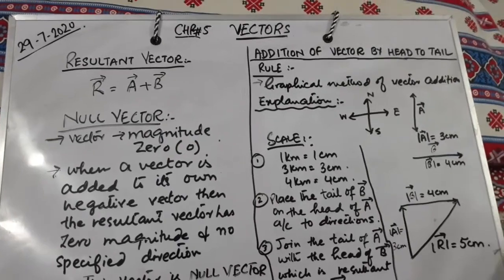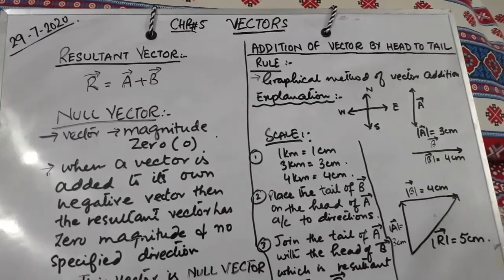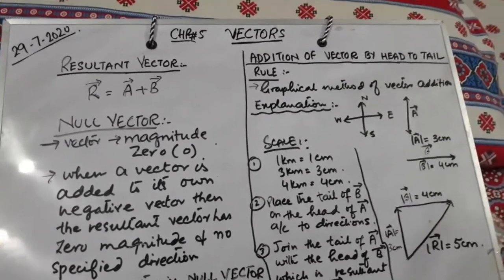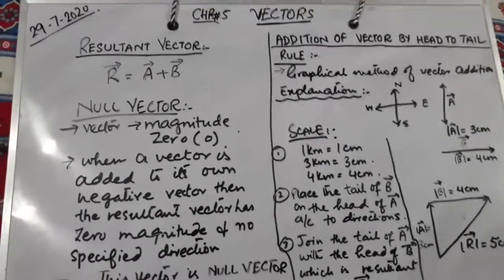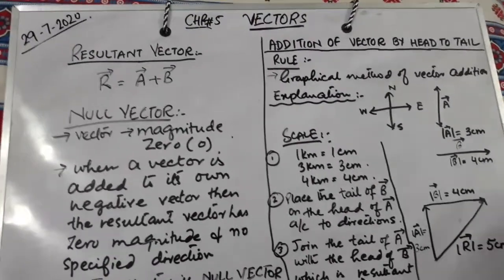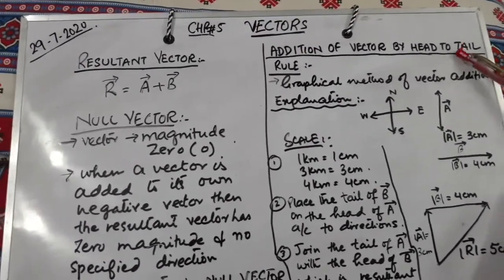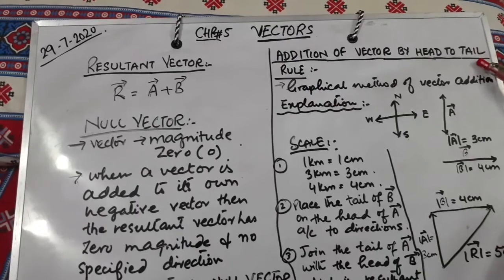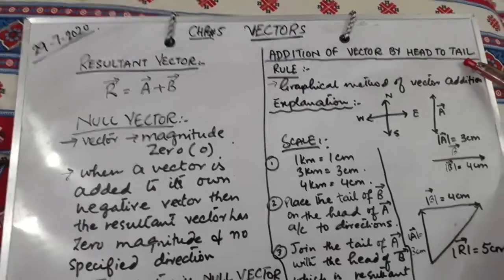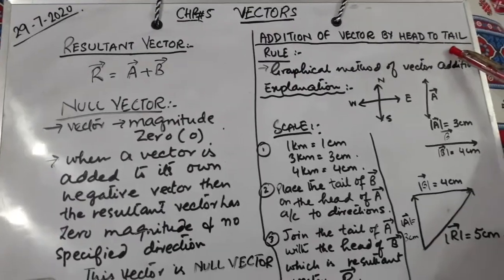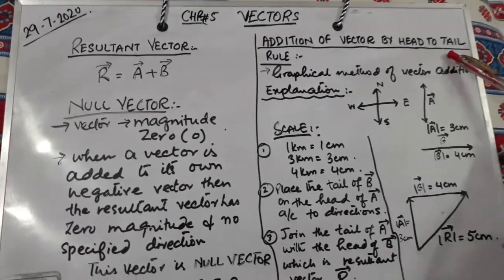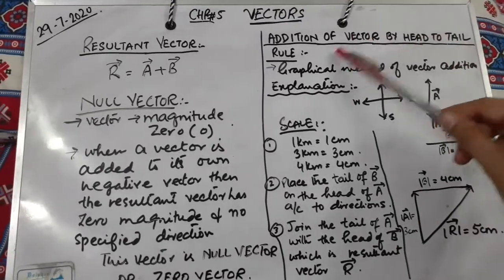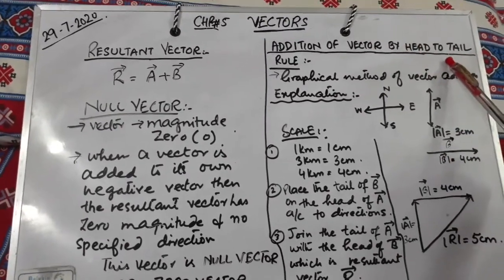Now the second topic is addition of vectors. As I have told you, in simple arithmetic rules you cannot do addition of vectors. Vector addition follows different rules. The first method is addition of vectors by the head to tail rule.